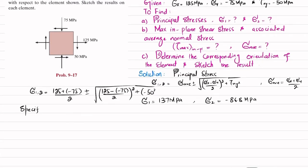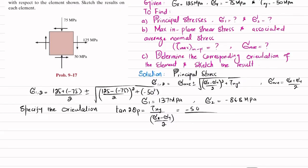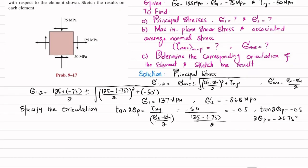Now we will specify the orientation — the angle through which these principal stresses act. The formula is: tan(2θp) = τxy / [(σx − σy)/2]. Putting in the values: minus 50 divided by (125 − (−75))/2, which gives minus 0.5. So tan(2θp) = −0.5, which gives 2θp = −26.75°, and therefore θp = −13.28°.